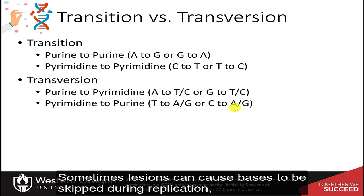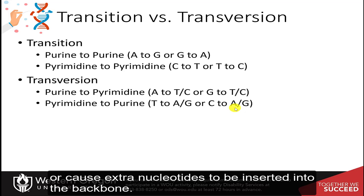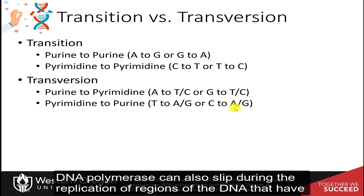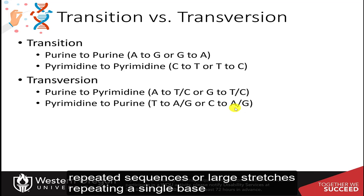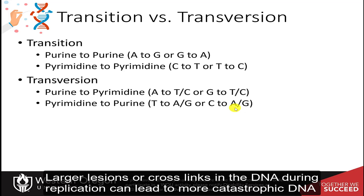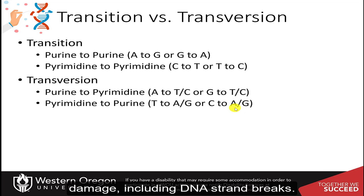Sometimes lesions can cause bases to be skipped during replication or cause extra nucleotides to be inserted into the backbone. DNA polymerase can also slip during the replication of regions with repeated sequences or large stretches repeating a single base. Larger lesions or crosslinks in the DNA during replication can lead to more catastrophic DNA damage, including DNA strand breaks.